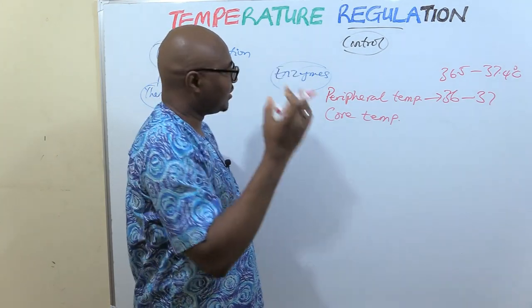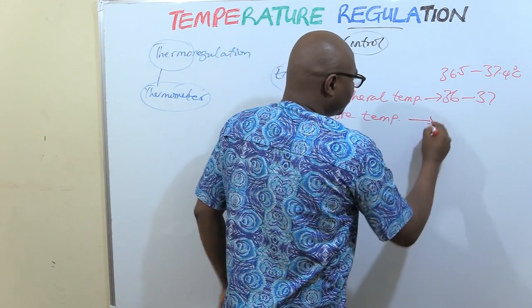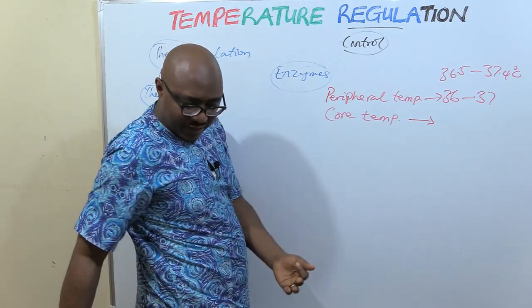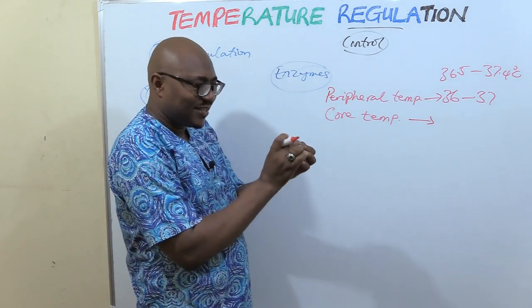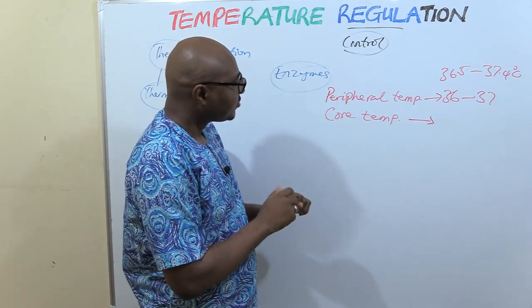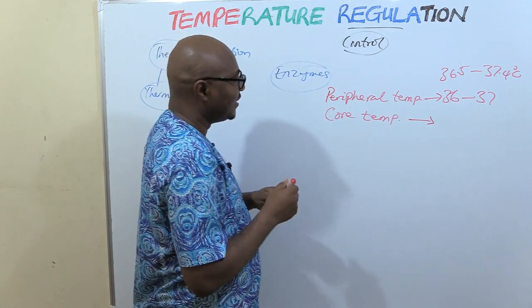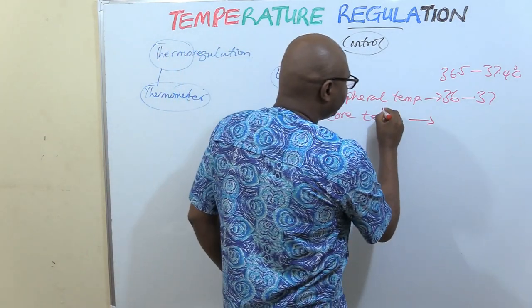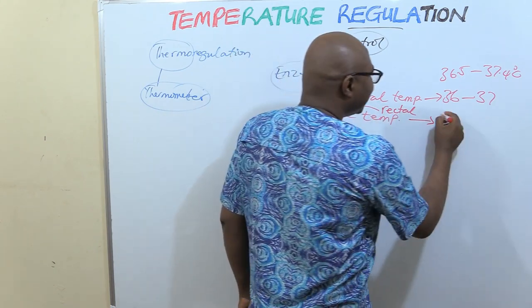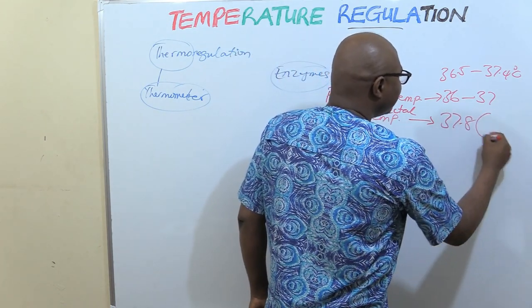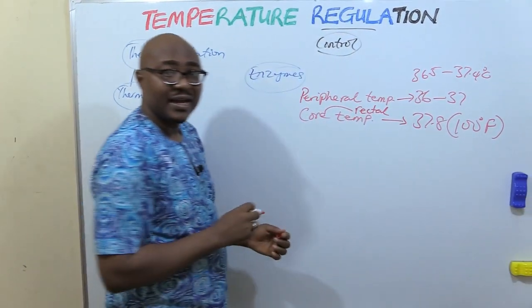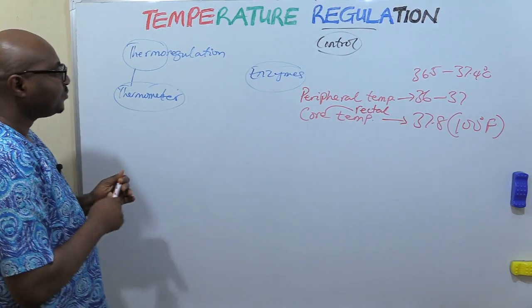Core temperature measures the temperature in the inner organs and the blood itself. Where you put the thermometer for core temperature is usually in the rectum. The rectum is very slender so it's easy to insert. Rectal temperature measures core temperature and is usually 37.8 degrees centigrade, which if you convert to Fahrenheit is about 100 degrees Fahrenheit.